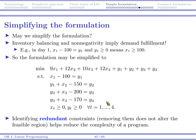The interesting thing is that we want to go through this example more deeply to give you the idea of simplification. May we simplify the formulation? Actually, we can, as long as we do some more deeper observations. The interesting thing is that inventory balancing and non-negativity actually imply demand fulfillment. Why does that? For example, in day one, we already know that your y_1 is calculated based on x_1 minus 100.